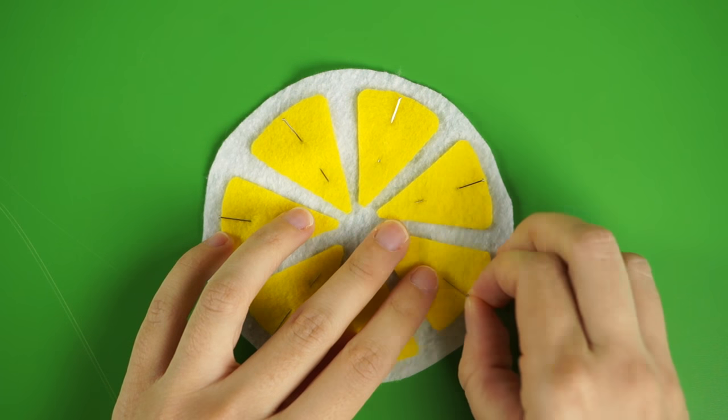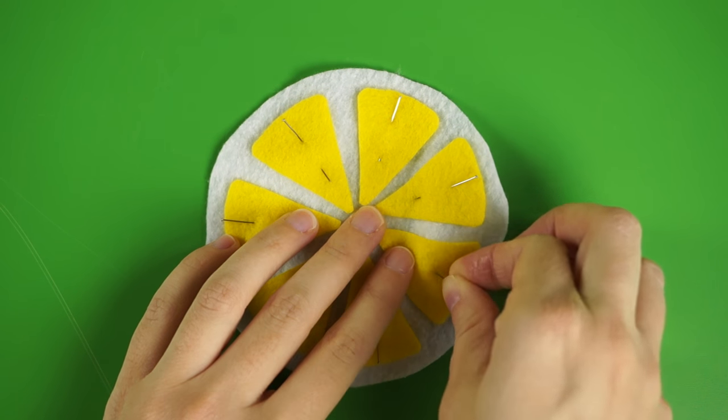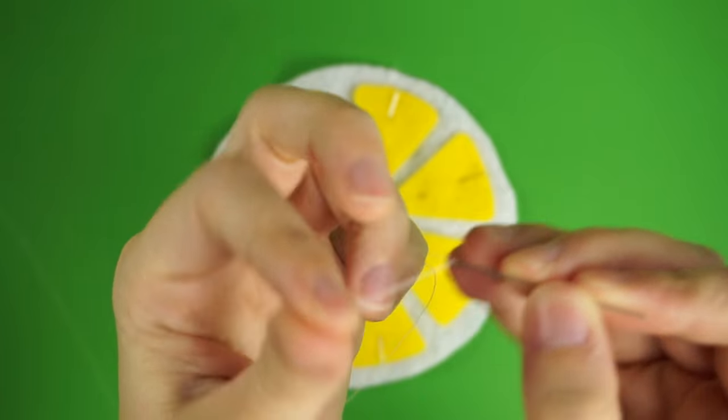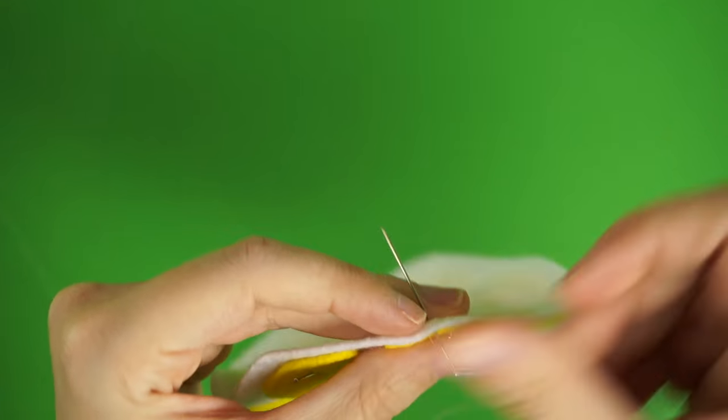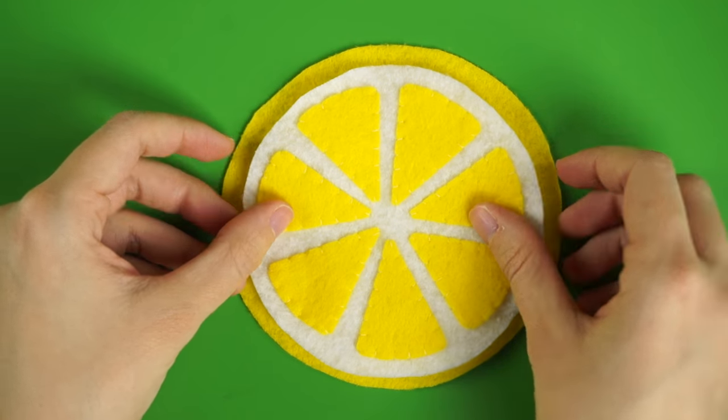Next, attach all of the slices to the white circle. You can either use fabric glue or pin and sew them down like I did. I used a whip stitch by hand, but you could also use a sewing machine if you have one. Once you've finished that step, it should look like this.